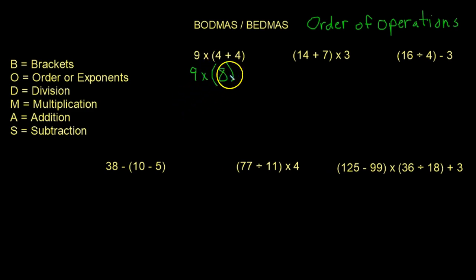And if you want, you can get rid of the brackets, you don't really need them there. So now 9 times 8 is 72, and solved. Okay, that's how you do it.